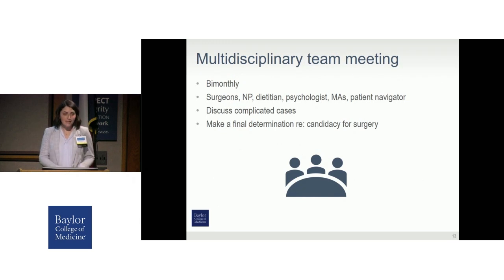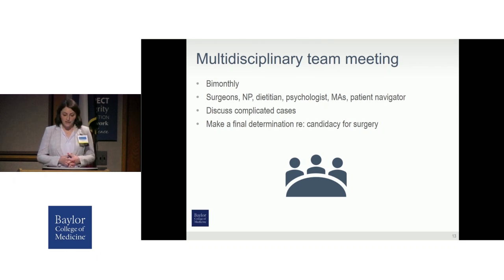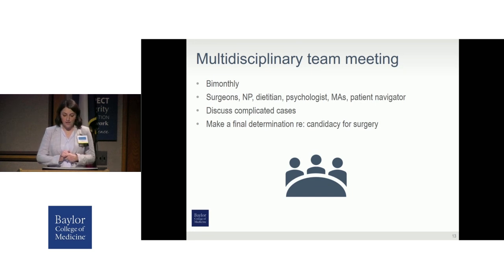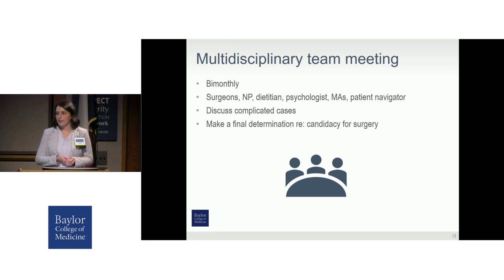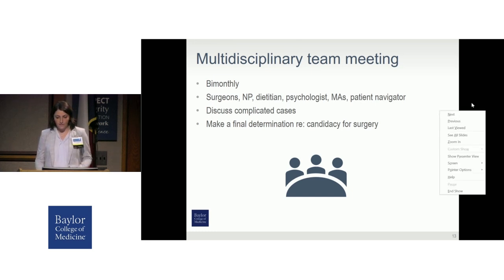In cases where patients are not immediately acceptable candidates, they are typically brought up for discussion at our multidisciplinary team meetings. Our team — which includes the surgeons, NP, dietitians, psychologists, MAs, patient navigator, and program coordinator — meets twice a month. The goals of the meeting are to discuss complicated cases and make a determination regarding each patient's candidacy for surgery, and if someone's maybe not a candidate now, what could they do to improve their candidacy and move forward with surgery in the future?